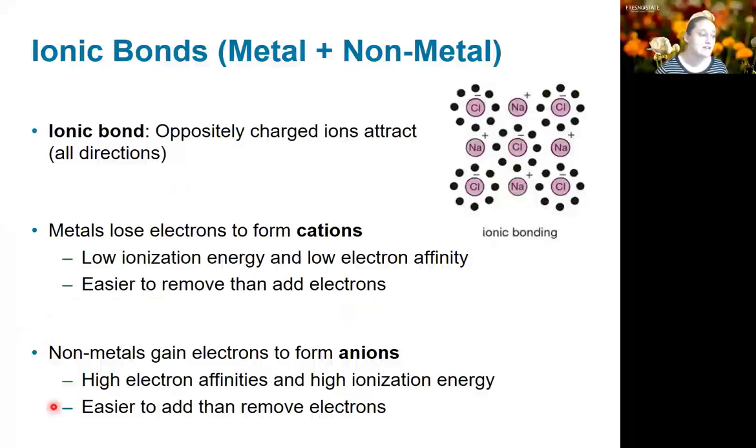In non-metals we have the opposite situation, where they have a high electron affinity—they want the electrons—and they have a high ionization energy, they don't want to give up their electrons. So in that case it's going to be easier to add electrons than to remove them. This combination results in electrons being transferred and we get an ionic bond.